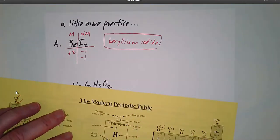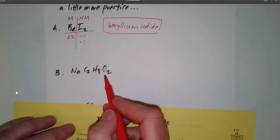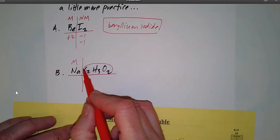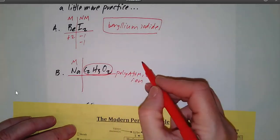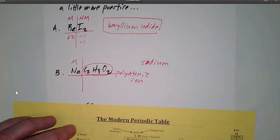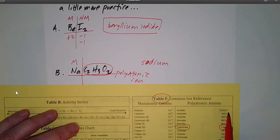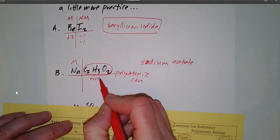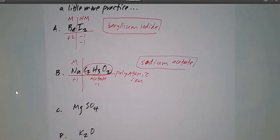Next: NaC₂H₃O₂ — that's a lot of letters, but remember there are only two parts. Sodium is my metal. C₂H₃O₂ must be a polyatomic ion, so you look on the back of your periodic table. Scanning Table F, C₂H₃O₂ with a minus one charge is called acetate. So the name is sodium acetate. Sodium has a plus one charge and acetate has a minus one charge.